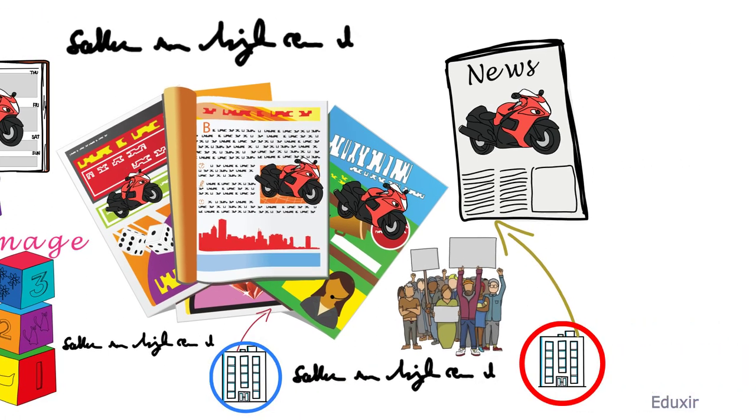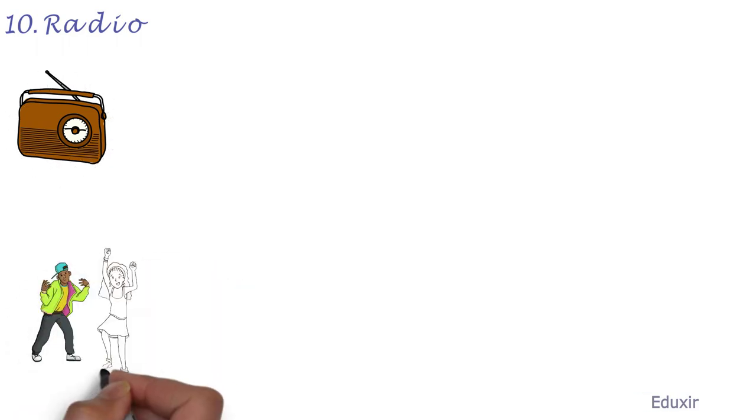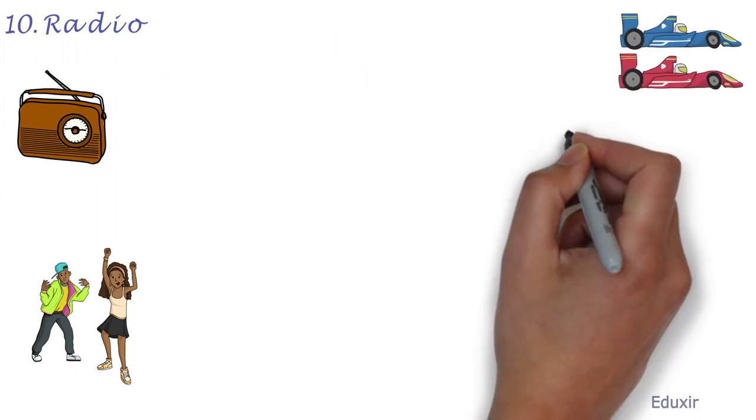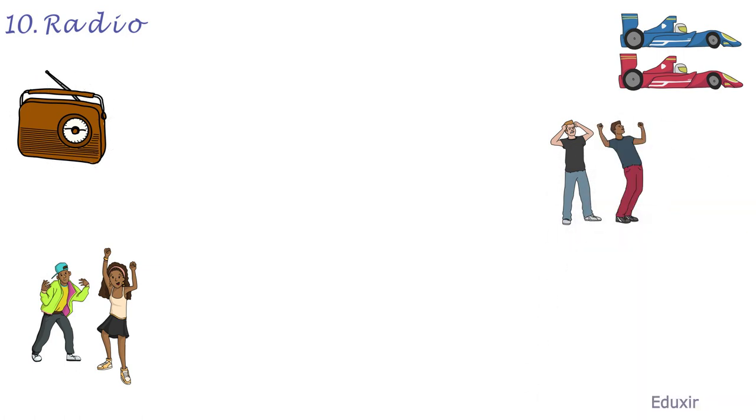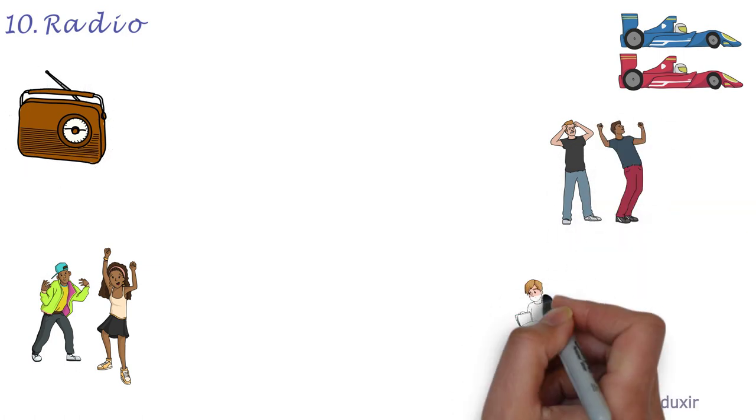The tenth form of media option available is Radio. Radio advertising is effective to reach targeted audience like teenagers, racing followers, or book lovers, etc.